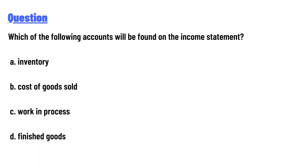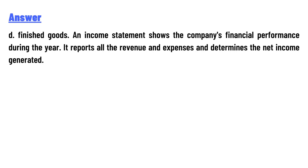Option A: inventory. Option B: cost of goods sold. Option C: work in process. Option D: finished goods. The answer to the question is D, finished goods.